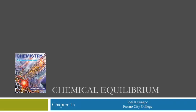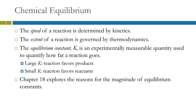Chapter 15, the topic is chemical equilibrium. In chapter 14, we were talking about kinetics — rates of reaction — which has to do with the speed of a reaction. The extent of a reaction, how far it goes, is governed by thermodynamics. The equilibrium constant, symbolized by a capital K, is an experimentally measurable quantity that we use to quantify how far the reaction goes.